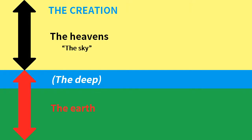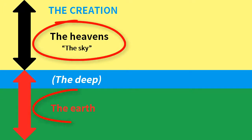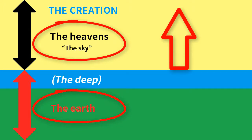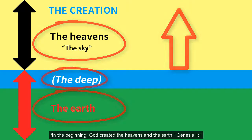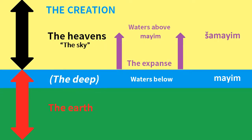Rather, the cosmology of Genesis 1 views the creation as having two parts: the sky and the earth. The sky starts at the surface of the earth and extends upwards. In the beginning, God created the heavens and the earth. At its origin, the earth was covered with deep water. Because ancient polytheists prayed to their gods for rain, Genesis explains how it was the God of the Bible who created the sky from which rain falls.